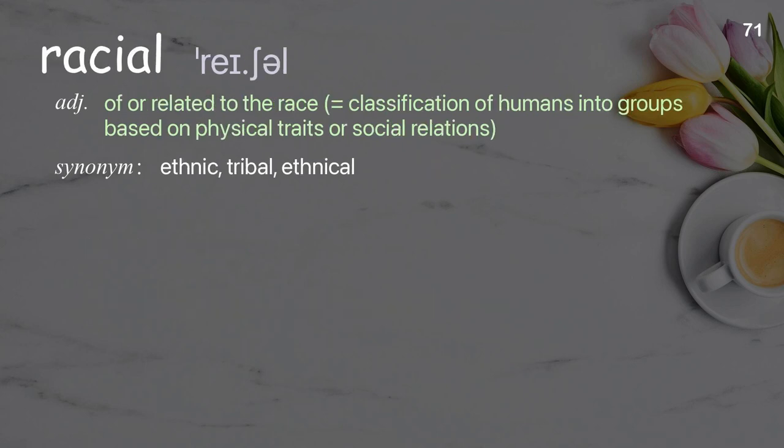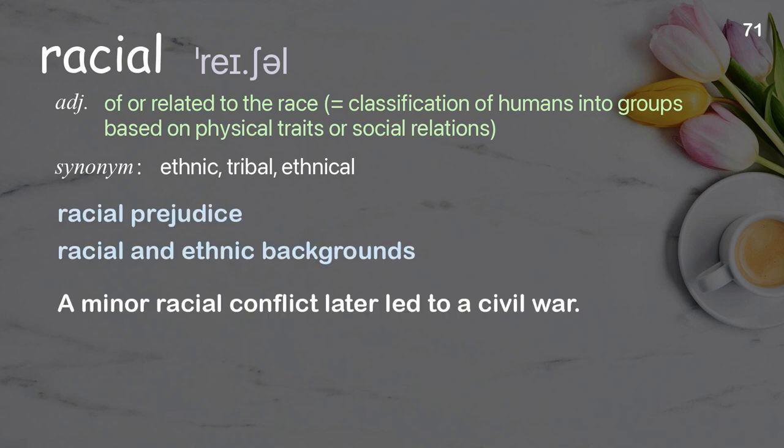Racial. Of or related to race, meaning the classification of humans into groups based on physical traits or social relations. Examples: Racial prejudice. Racial and ethnic backgrounds. A minor racial conflict later led to a civil war.